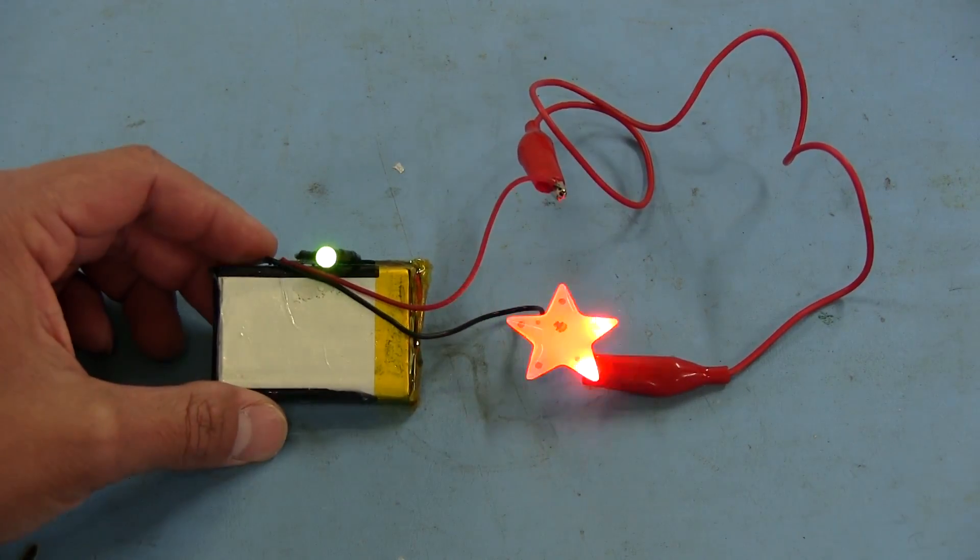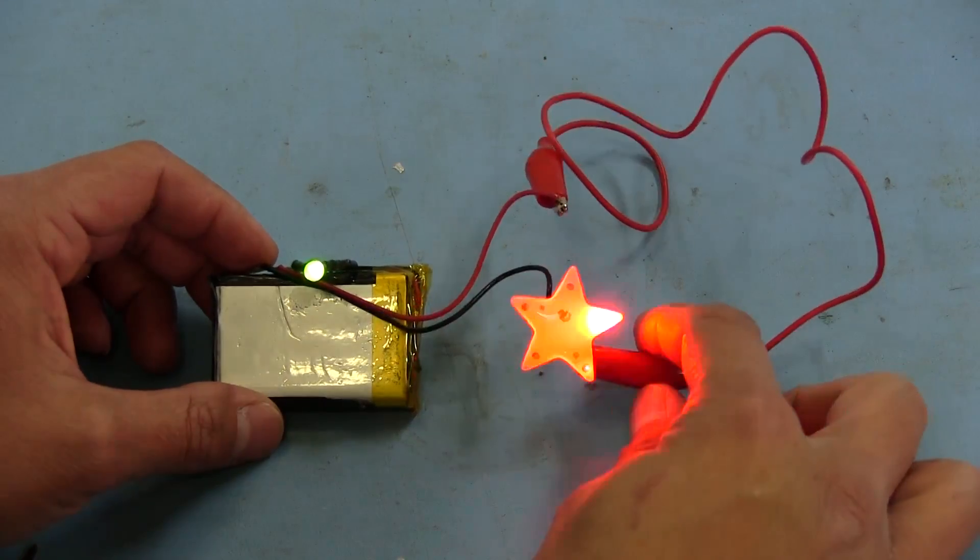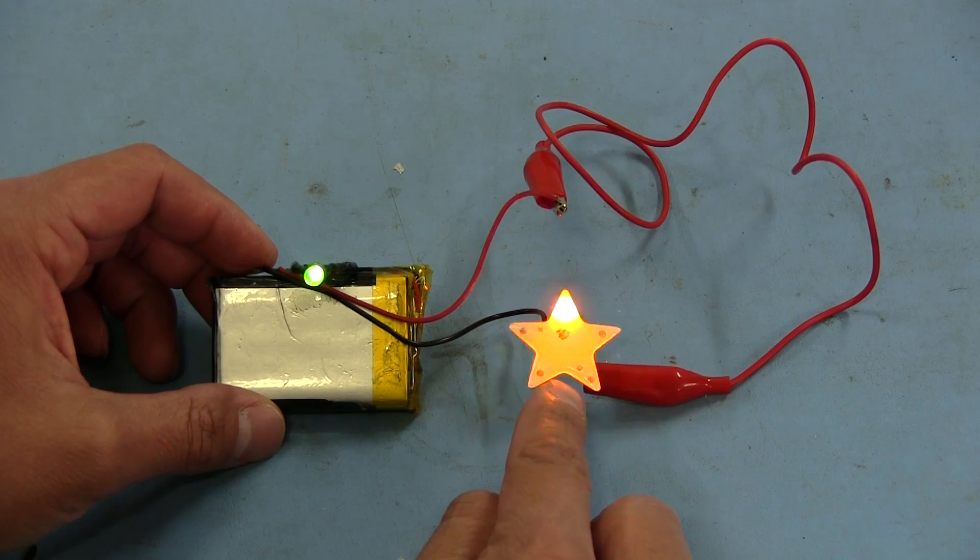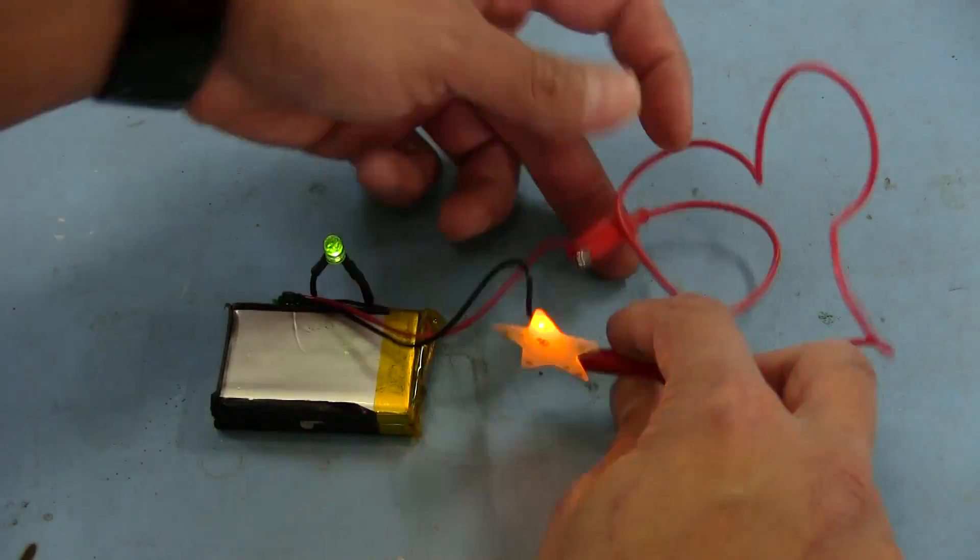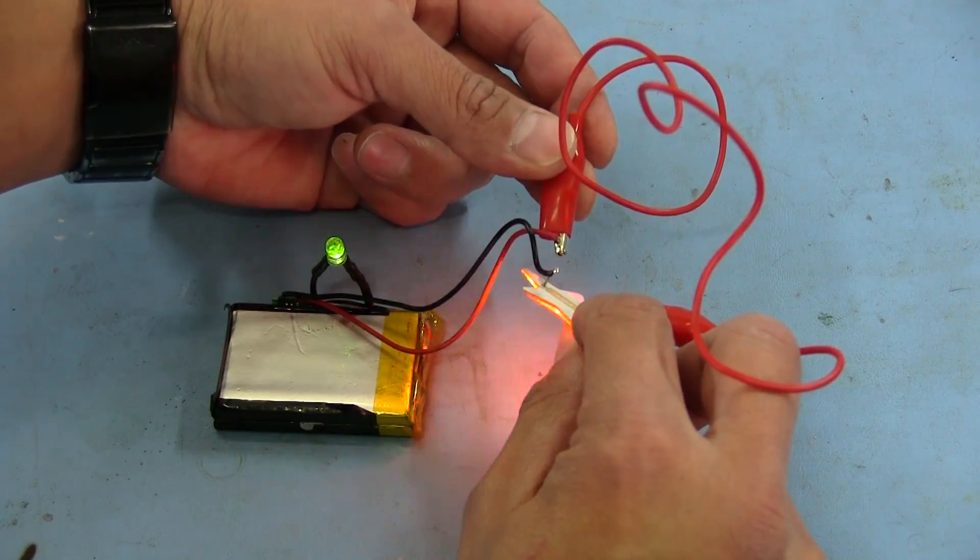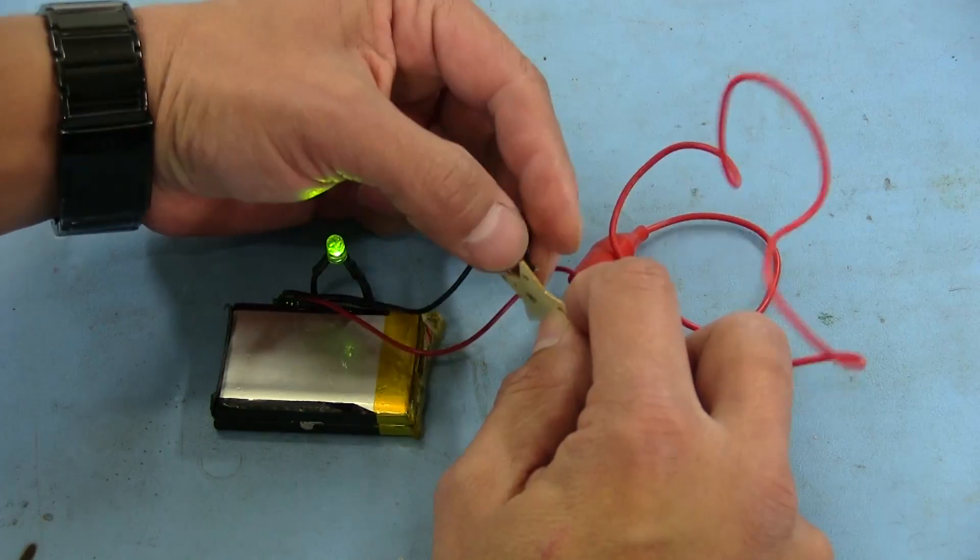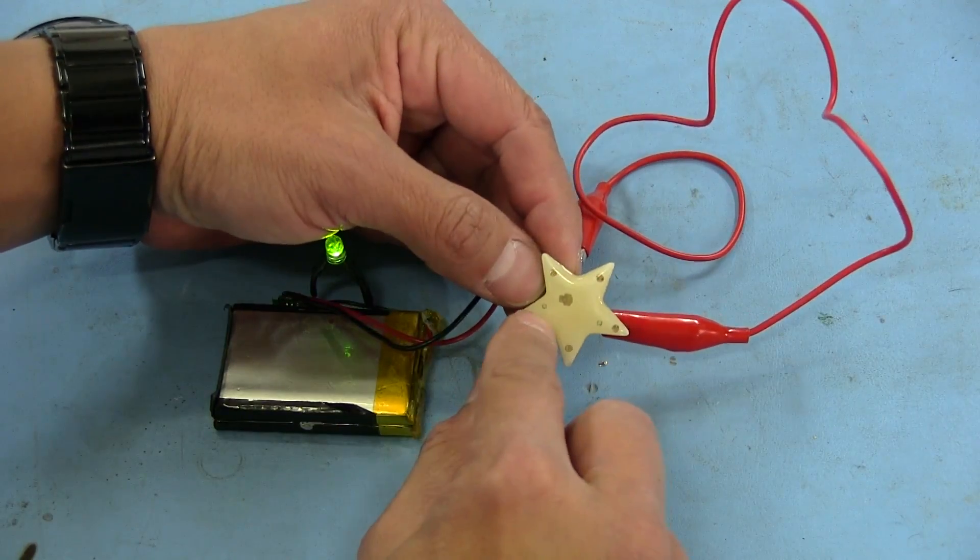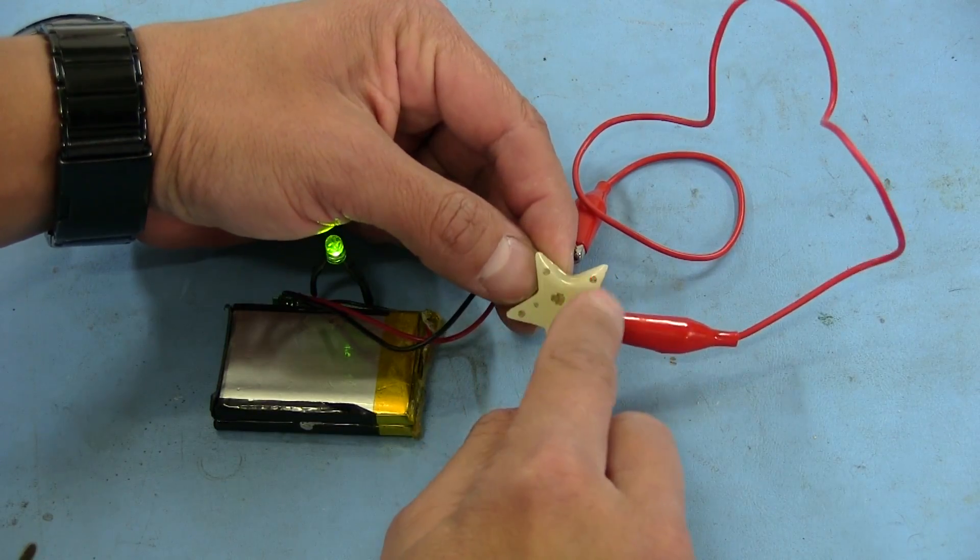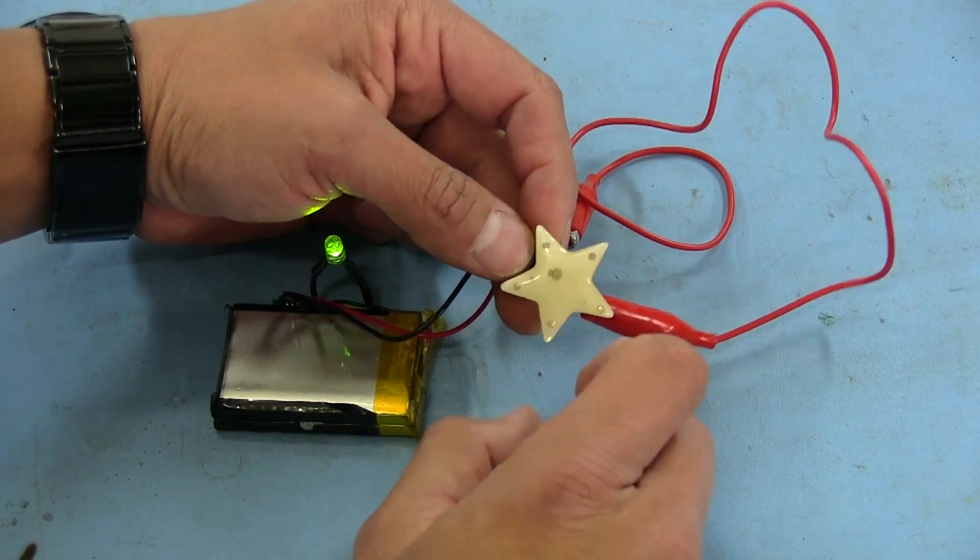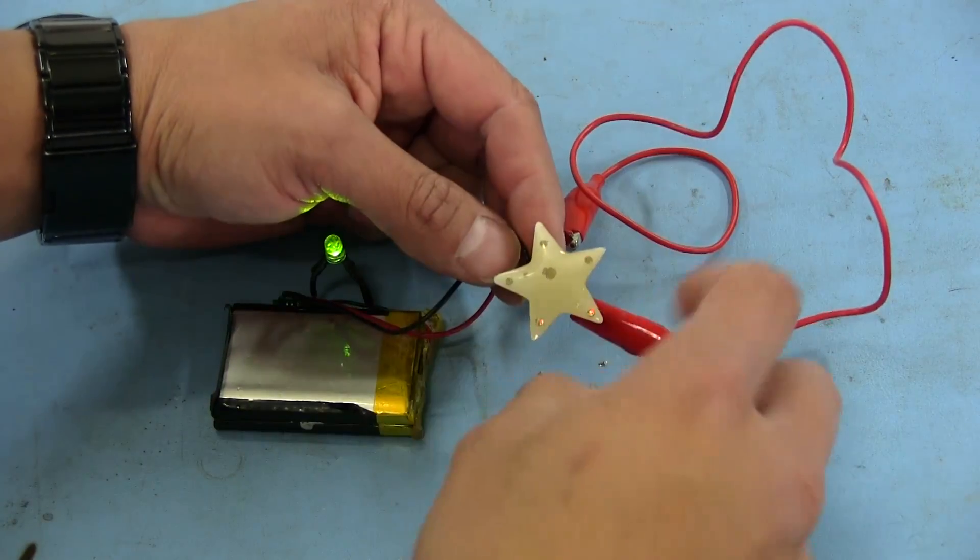Basically what happened was when the MOSFETs on the controller board shorted, it was as if we took this positive and the negative and touched them together like that. So our controller board stopped working. There's actually still flashing a tiny little bit because there's still a little bit of current going through the output here.